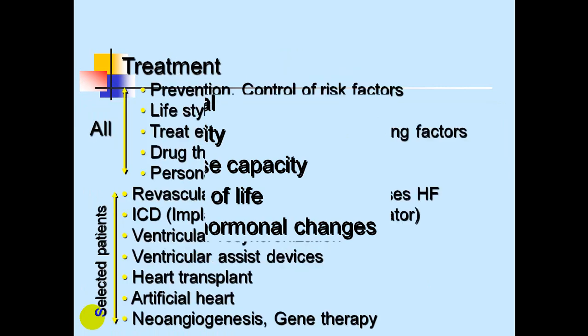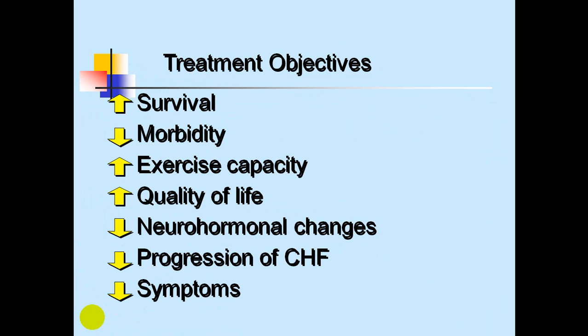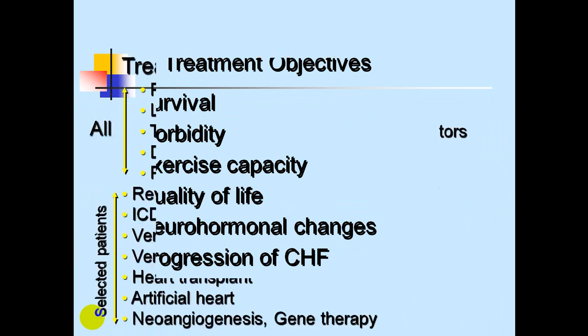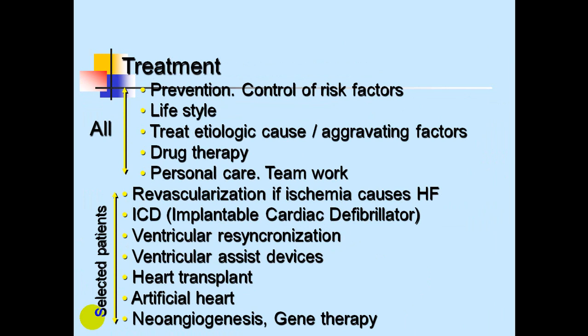It is essential to treat patients with heart failure. The objectives of treatment include increasing survival, decreasing morbidity, increasing exercise capacity, improving quality of life, modifying neurohumoral changes through receptor blockers, decreasing progression to congestive heart failure, and decreasing symptoms. Treatment for all patients includes prevention and control of risk factors, lifestyle modification, treating etiological causes and aggravating factors, drug therapies, personal care, team-based care, and rehabilitation.